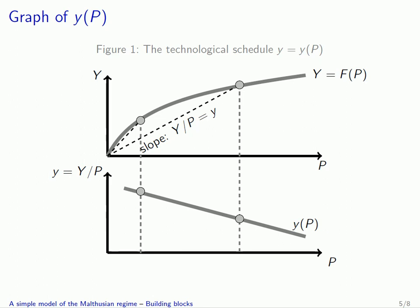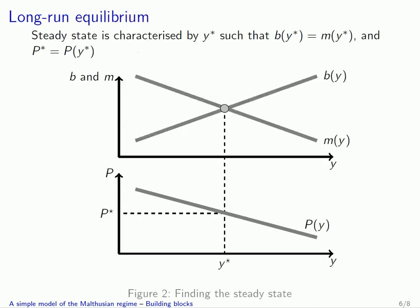On the upper panel of the graph, we have the production function — big Y, aggregate output, as a function of population. What you can see is that the slope of the line between the origin of the graph and the point on the production function becomes smaller and smaller as population increases. It turns out that this slope is precisely big Y divided by p, so that's income per inhabitant. Once we have a concave production function, small y equals big Y over p is indeed a decreasing function of population.